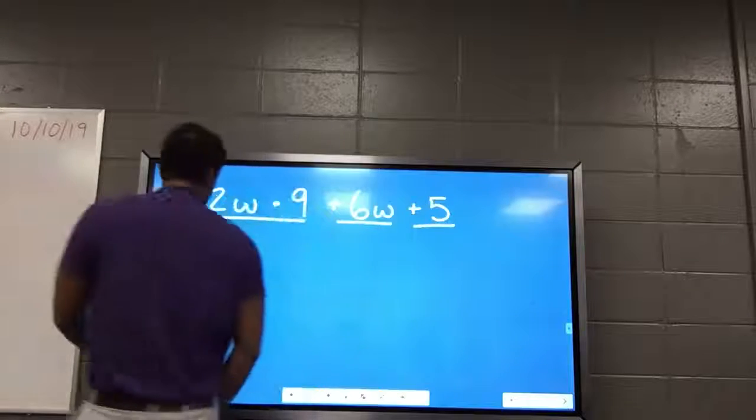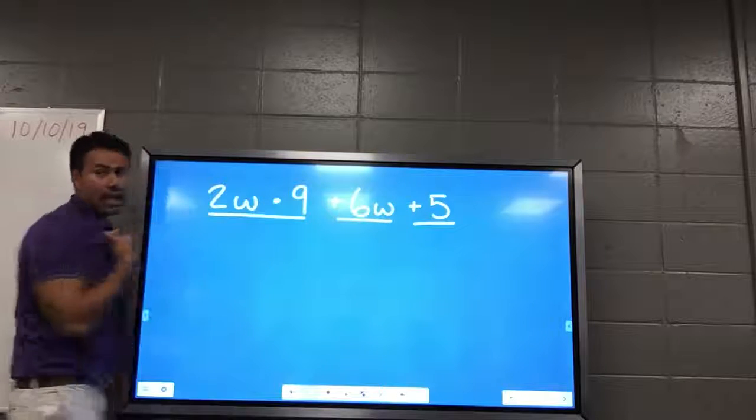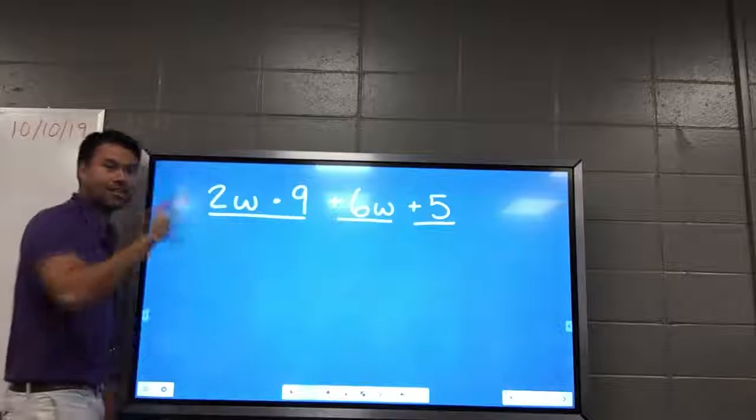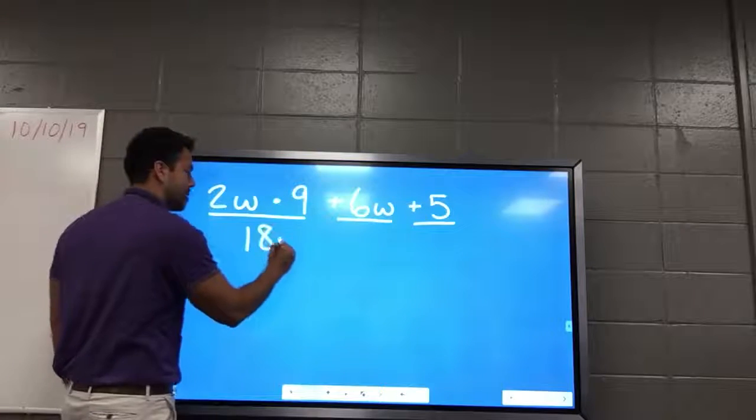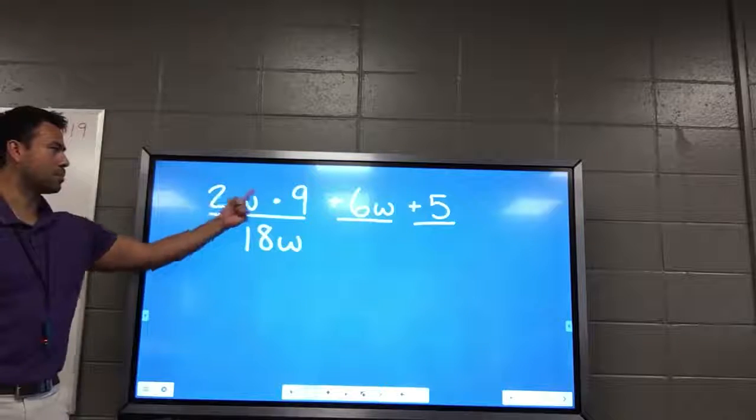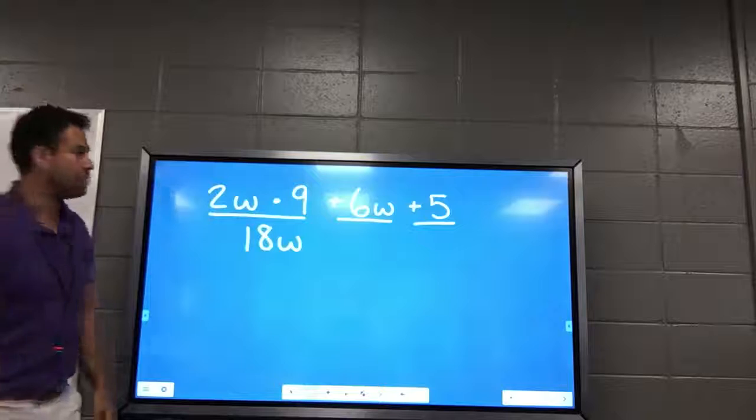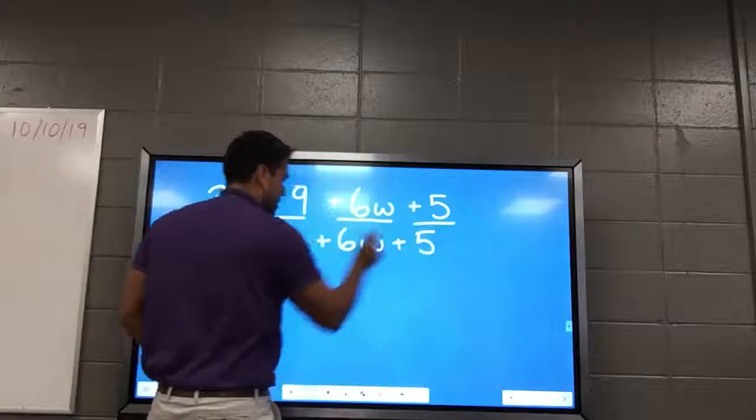Okay, now this is a good review, but what's two W times nine? Raise your hand. Don't just call it out. Yes, Stella? Oh, sorry, is that a hand? Yeah. Okay, cool. Eighteen W. It's eighteen W. You just multiply the numbers. Just multiply nine and two. That's eighteen. Keep the W. I like it. All right, then plus six W, plus five didn't go away, so that's what I have.